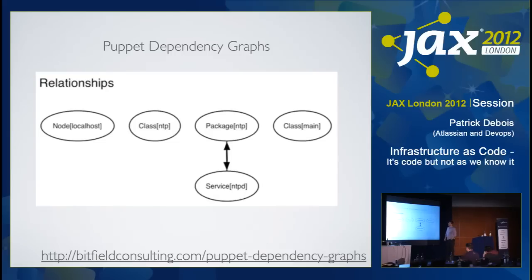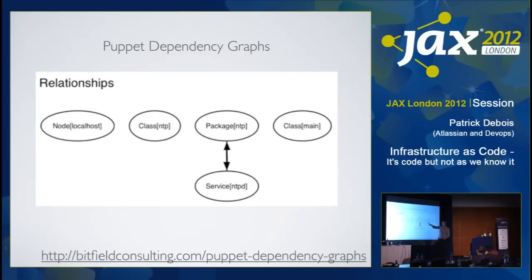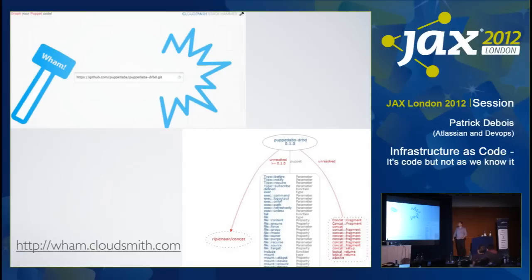If you start having more complex dependencies on other modules, the nice thing about Puppet's directed graph is that you can start visualizing it. You can see that there's a dependency on these two, and that a dependency on something else hasn't been specified. There's a service called CloudSmith where you put the Git URL of your module and it will visualize and say this one depends on that, and these are the parameters you can specify. So it's getting pretty cool for visualization.